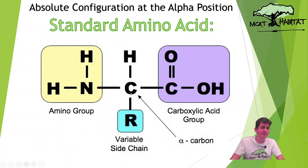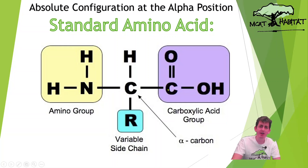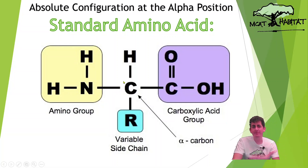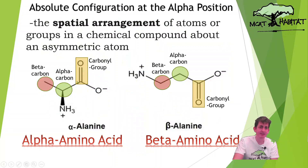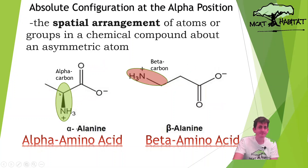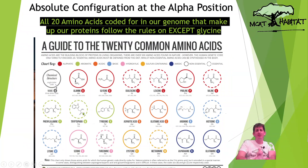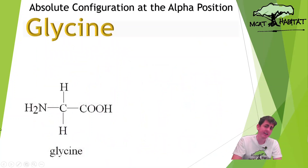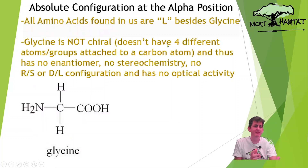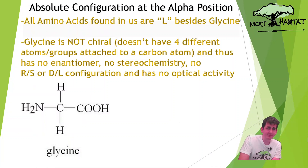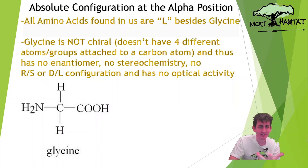So we're going to talk about alpha amino acids and the alpha carbon. We always see this alpha carbon connected to the carbonyl carbon, and it's also directly connected to the amino group, which is why we'll always be talking about alpha amino acids. There are 20 of these amino acids. All of them follow the rule, except glycine. Glycine is not chiral — it doesn't have four different atoms or groups attached. Thus, it has no enantiomer, no stereochemistry, no configuration of R, S, D, or L, and no optical activity.